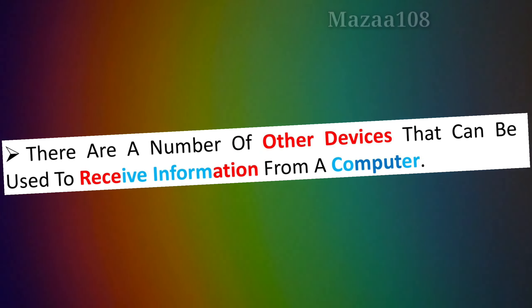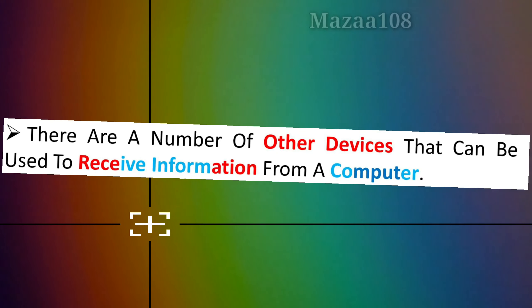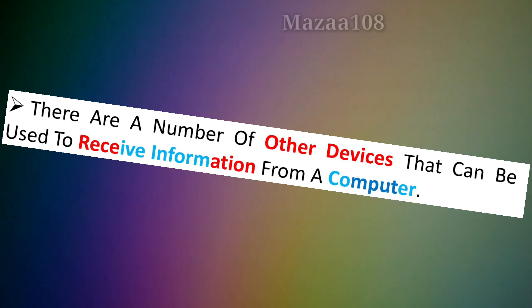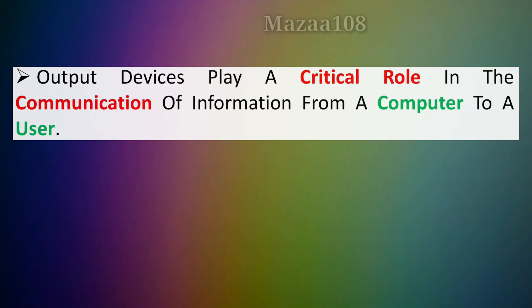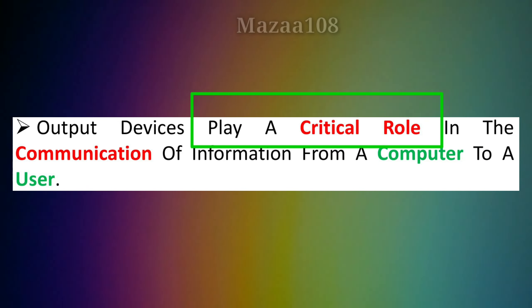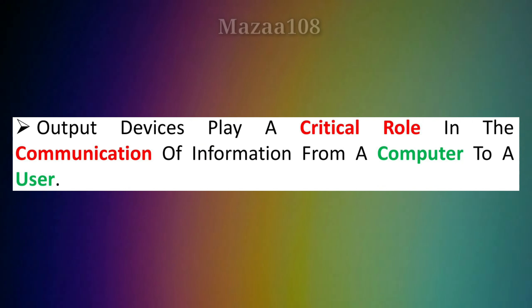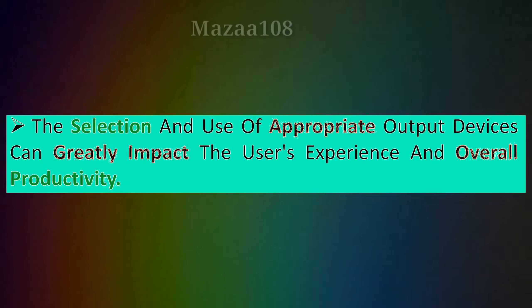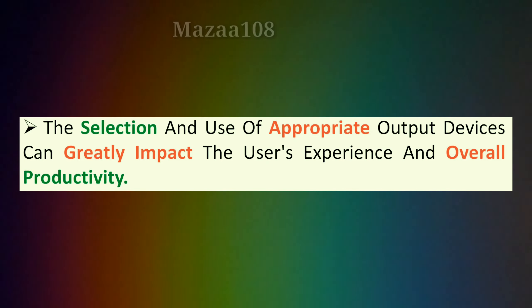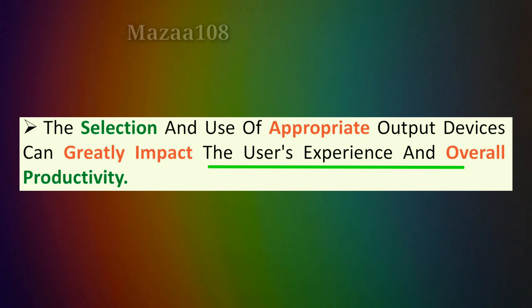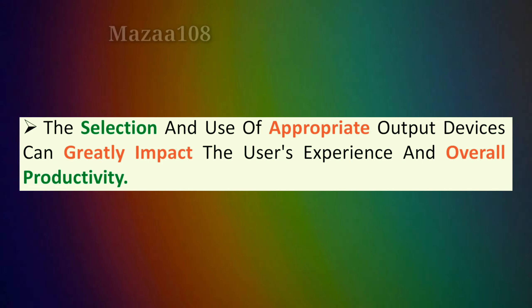There are a number of other devices that can be used to receive information from a computer. Output devices play a critical role in the communication of information from a computer to a user. The selection and use of appropriate output devices can greatly impact the user experience and overall productivity.